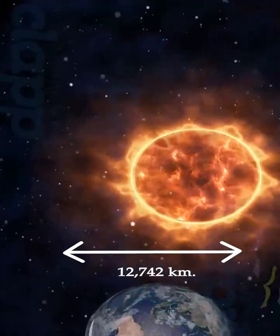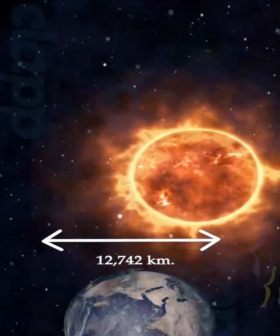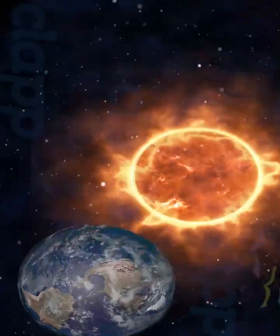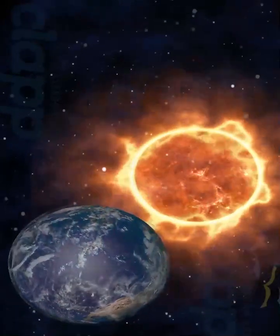The diameter of Earth is 12,742 kilometers. Earth takes 24 hours to complete a rotation about its own axis.